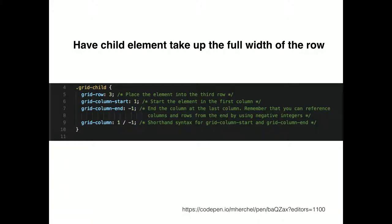Something useful I do a lot is use negative numbers for grid columns. Negative numbers start counting from the end. So if I have an eight-column grid, instead of saying grid-column: 1 / 8, I can say grid-column: 1 / -1, and it will go from the first column to the very last column — so I don't have to change that in media queries. You could do grid-column: 2 / -2 to center it.